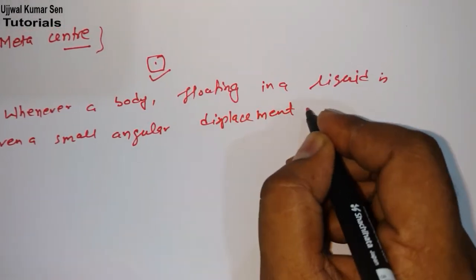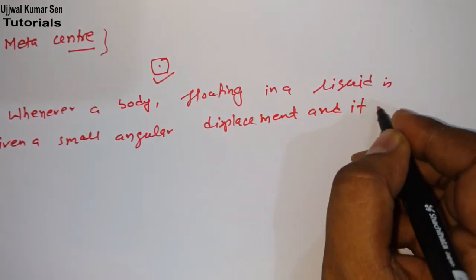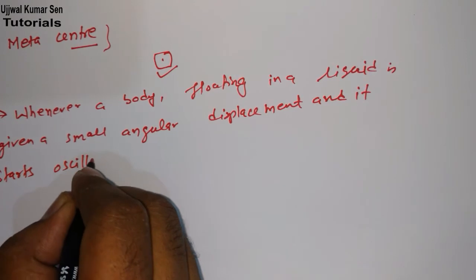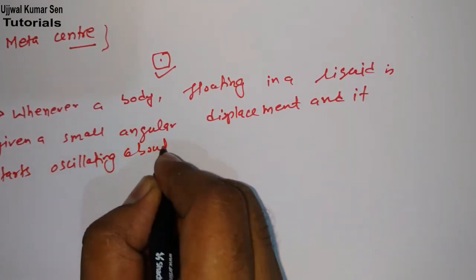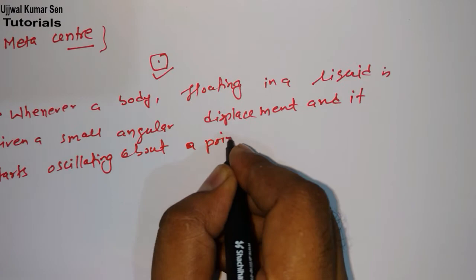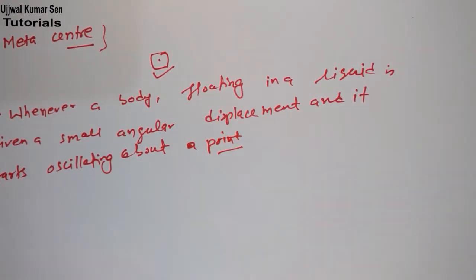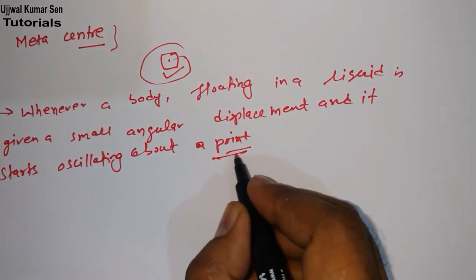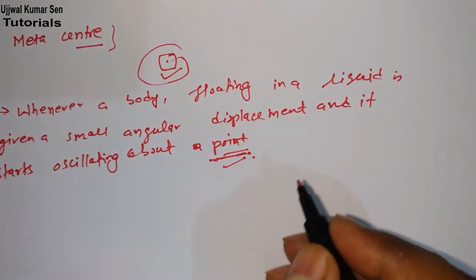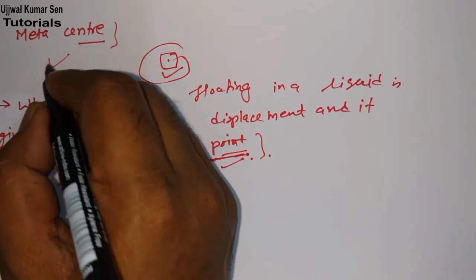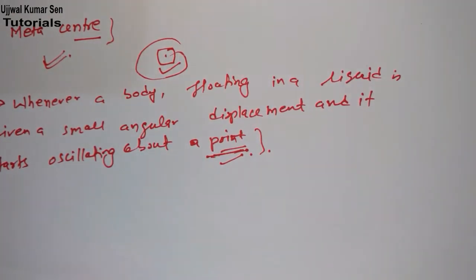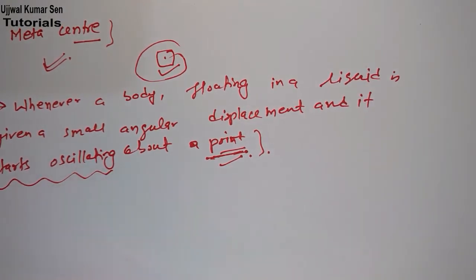It oscillates about a point. As I said earlier, it's all about a point. So it will start oscillating about a point, and that point is known as metacenter. You need to focus on this—it starts oscillating about a point, and that point is known as metacenter.